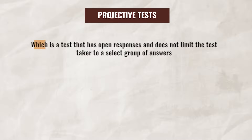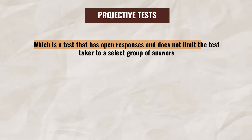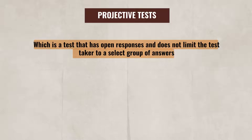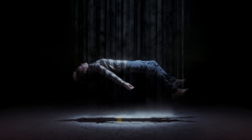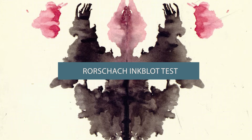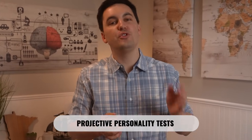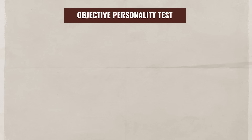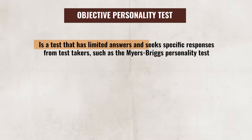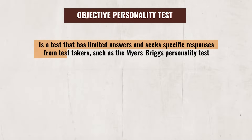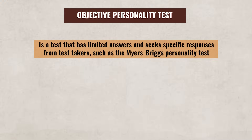When it comes to assessing personality, the psychodynamic approach generally utilizes projective tests. These are tests that have open responses and do not limit the test taker to a select group of answers. These tests help psychologists better understand a person's unconscious mind. Two examples of a projective personality test would be the Rorschach inkblot test and the Thematic Apperception Test. One thing to look out for on your test is not to mix up projective personality tests with objective personality tests. An objective personality test has limited answers and seeks specific responses, such as the Myers-Briggs personality test.